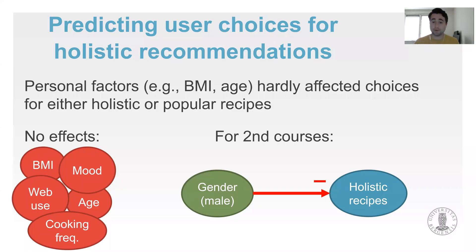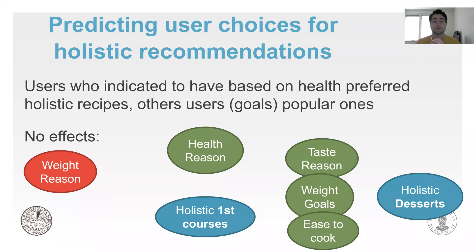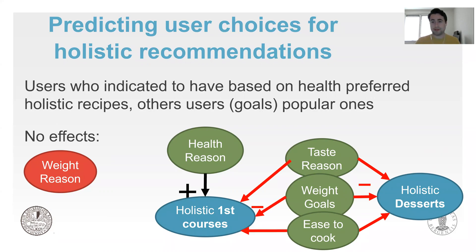We found that personal factors hardly affected user choices for holistic or popular recipes — mood, body mass index, and cooking frequency had no significant effect. Men were, however, more likely to choose popular recipes. With regard to motivations and goals, taste-related reasons did not determine popular or holistic recommendation choices. But health-related reasons were more likely to lead to holistic choices. Conversely, easiness, taste-related reasons, and users who had weight-gain or weight-loss goals were more likely to choose popular recipes.